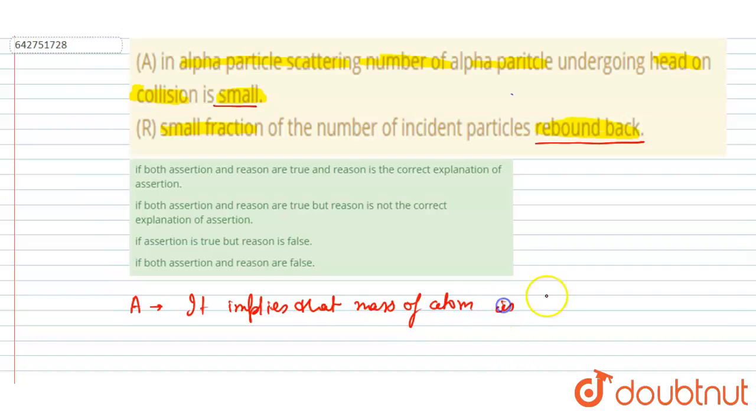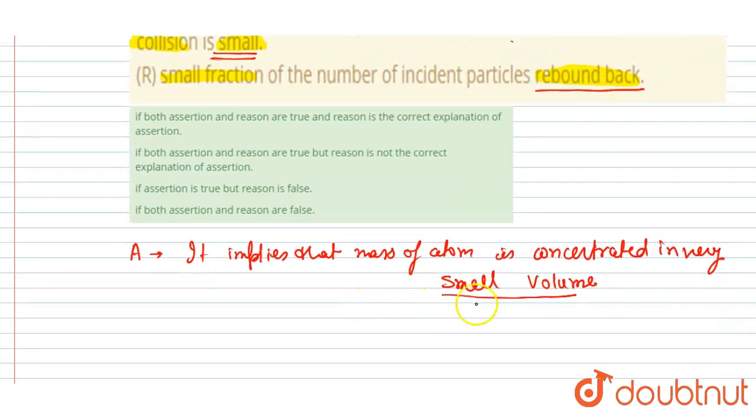Atom is concentrated in very small volume. Since the mass of atom is concentrated in very small volume, that's why the number of alpha particles which go head-on collision is very small, since the whole mass is concentrated in a very small volume.